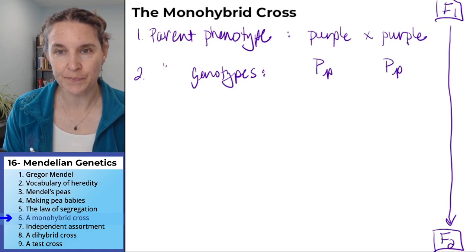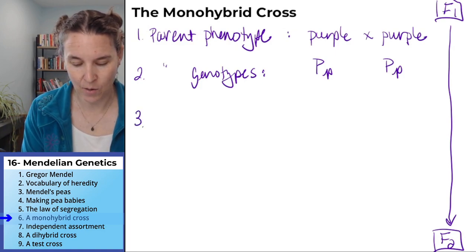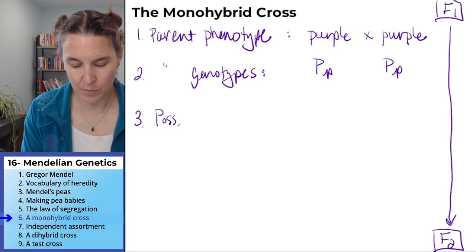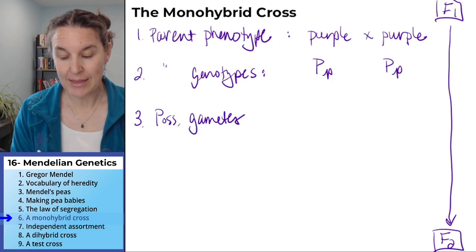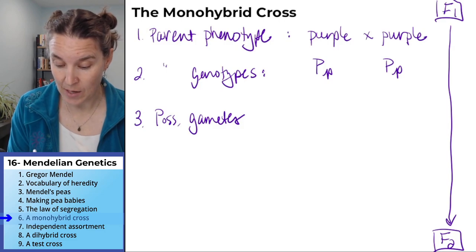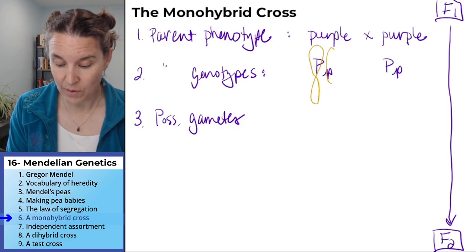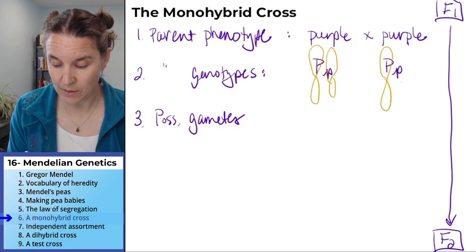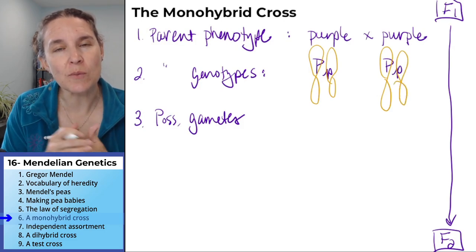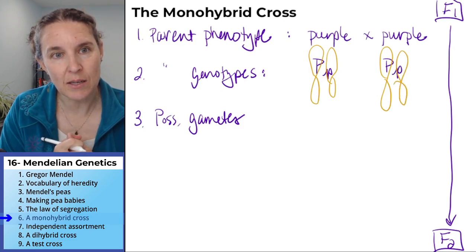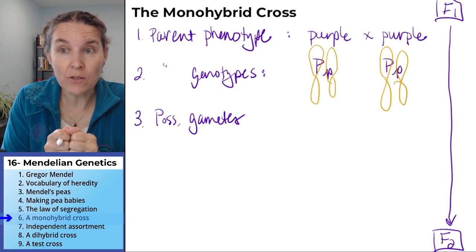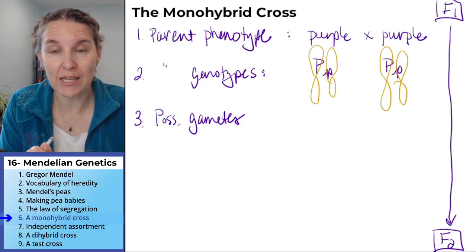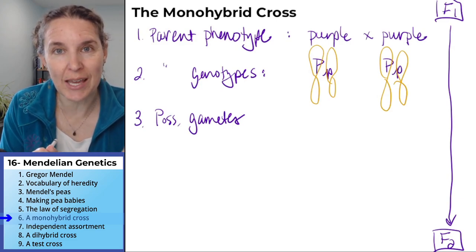Now, possible gametes. This is the place where, again, imagine we've got chromosomes, and those chromosomes are going to go through meiosis. One chromosome carrying the P gene is going to end up in each gamete.